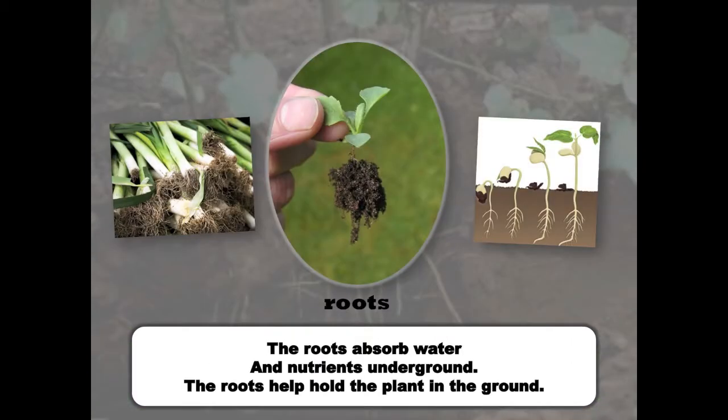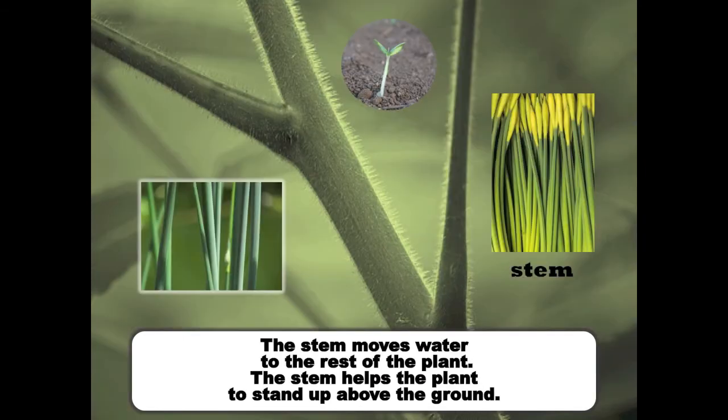The roots absorb water and nutrients underground. The roots help hold the plant in the ground. The stem moves water to the rest of the plant.